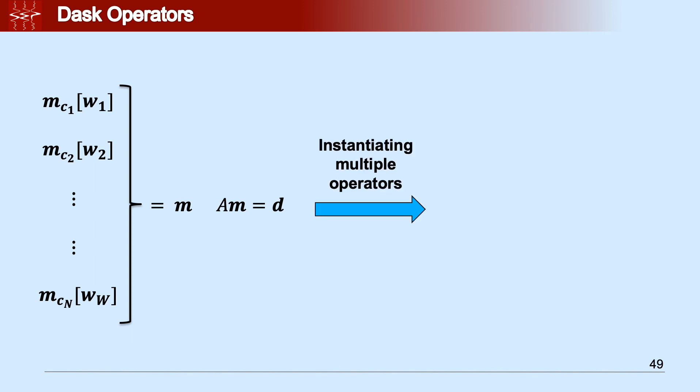Now that we saw how the Dask vector class works, let's see the Dask operator. So we have our Dask vector where each chunk stays on each worker, and we can call it M. And we want to see how we can transform it using an A operator. One thing that we can do, and it's very simple, we can just instantiate different operators on different workers. Once we do so, we can apply each operator on different chunks and obtain a new vector.